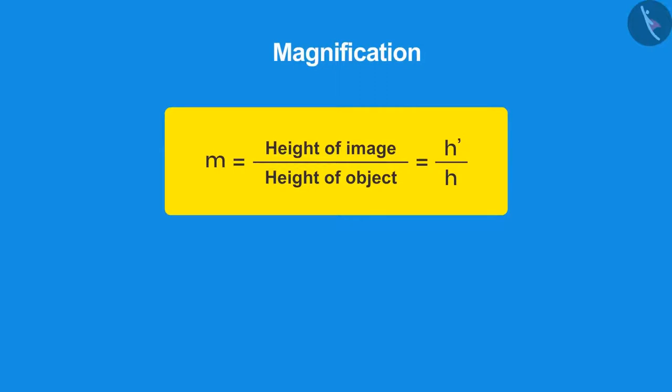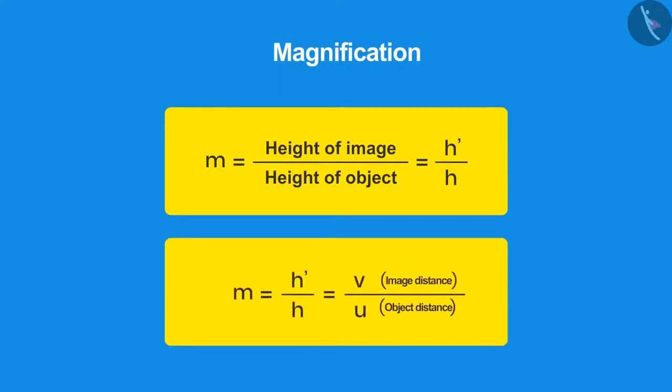This indicates how large or small the image is compared to the object. This mathematical relation shows the magnification of the lens. It can also be represented in the form of the ratio of image distance to object distance.